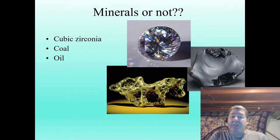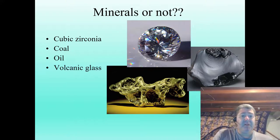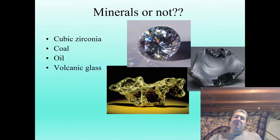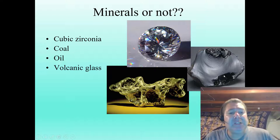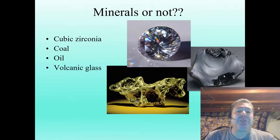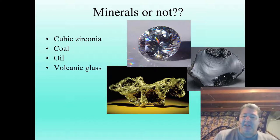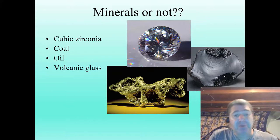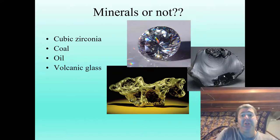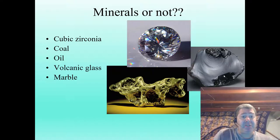Oil — not a mineral, because it is a liquid. Volcanic glass is actually not a mineral, as we'll learn in the next chapter. It's just frozen elements in space and time — the elements didn't have time to get together and make minerals before this stuff froze solid. It's just frozen liquid lava, basically.